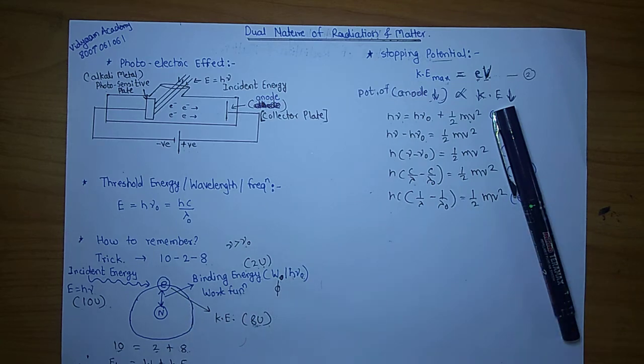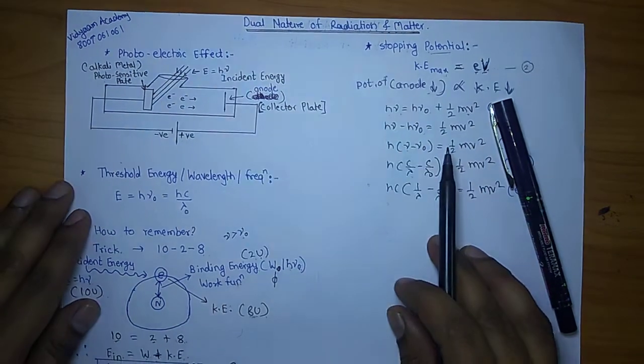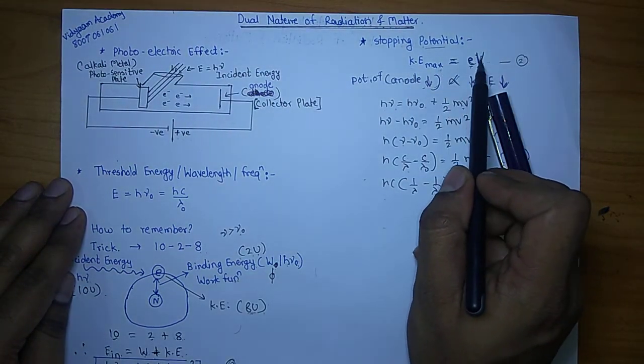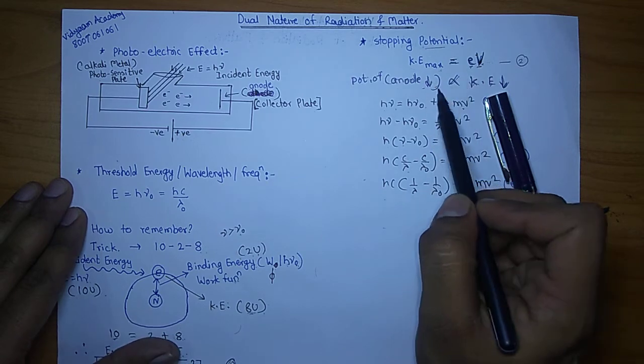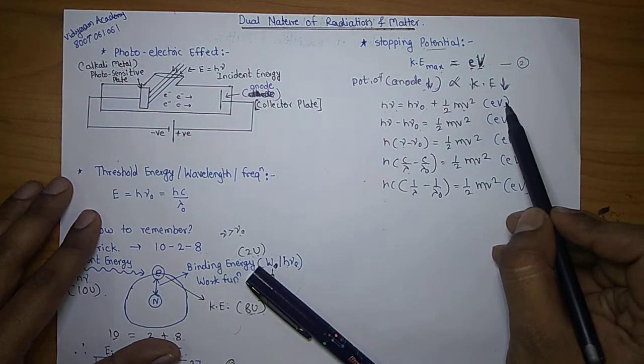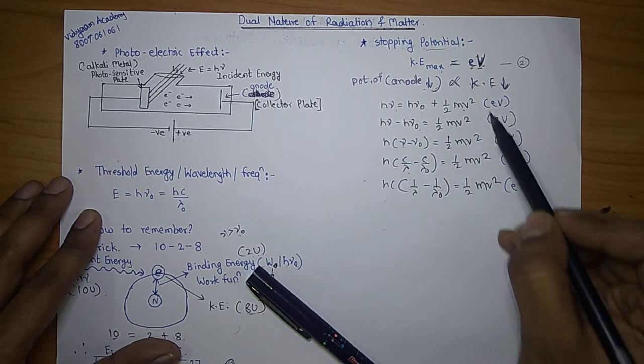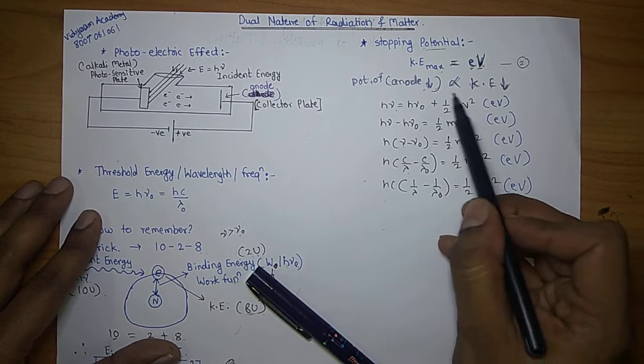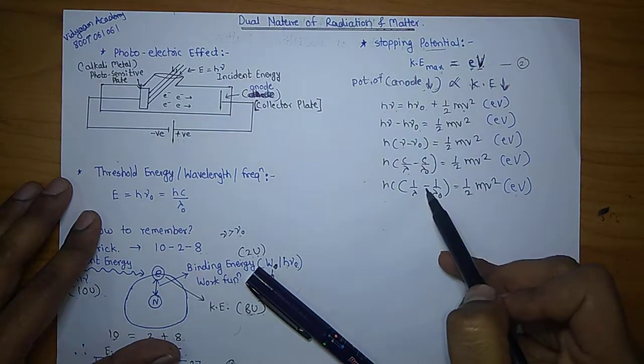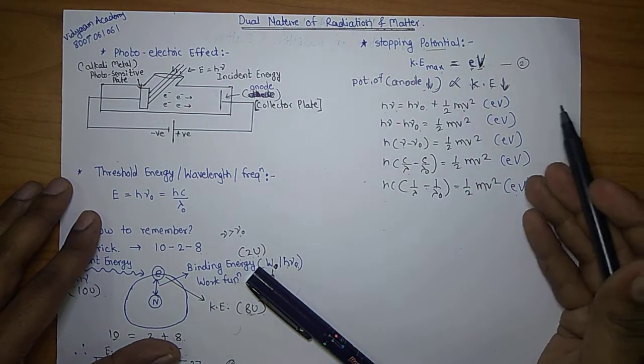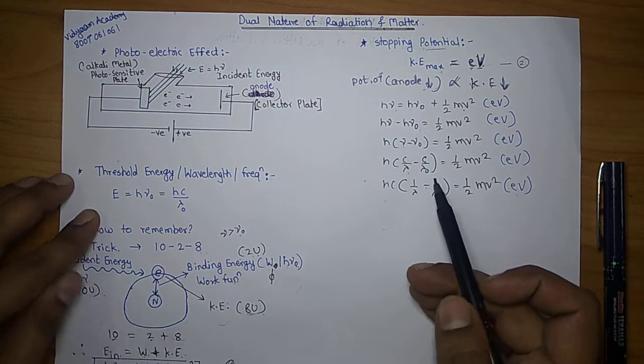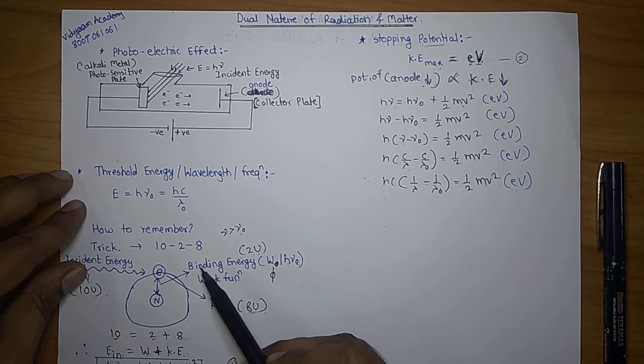So in this way, by just remembering this trick, you can develop different sets of formulae. This is the beauty of this trick. Furthermore, as I have shown you, kinetic energy is exactly equal to eV, so instead of kinetic energy you can directly write eV. So instead of one-half MV squared everywhere you can use eV. So that means there are ten different formulas that you can set by using just this simple trick. Thank you.